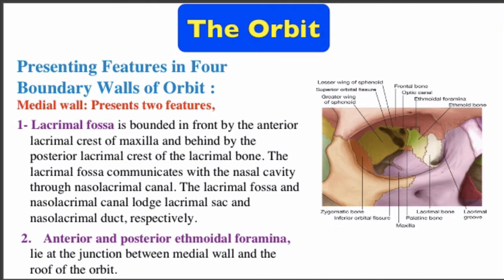Presenting features in the four boundary walls of the orbit. The medial wall presents two features. First: the lacrimal fossa, bounded in front by the anterior lacrimal crest of the maxilla and behind by the posterior lacrimal crest of the lacrimal bone. The lacrimal fossa communicates with the nasal cavity through the nasolacrimal canal, lodging the lacrimal sac and nasolacrimal duct respectively.